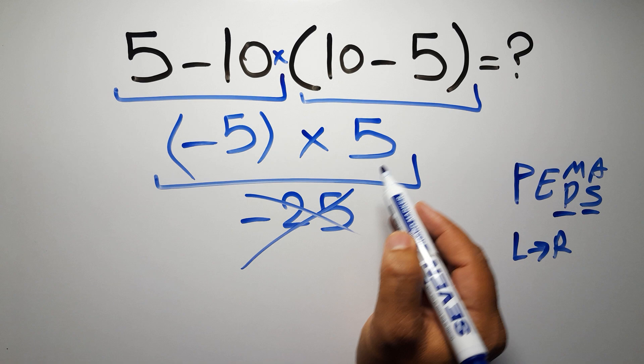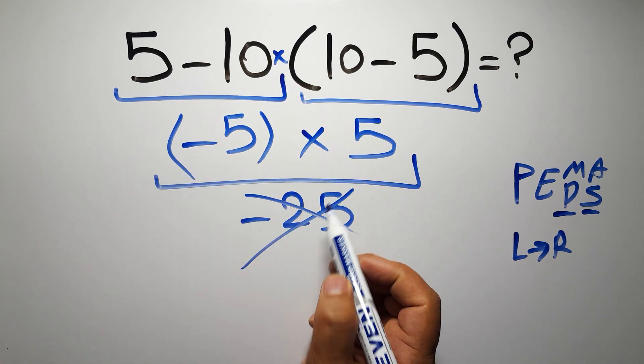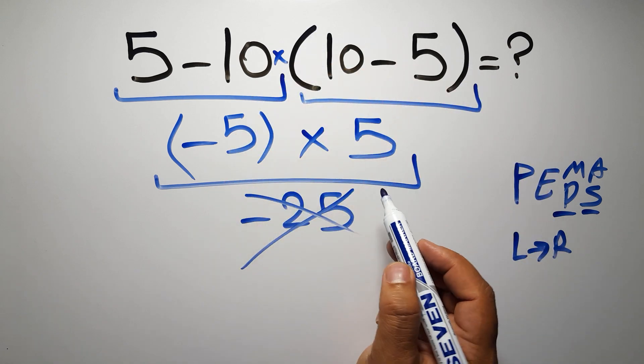According to the PEMDAS, first we have to do this parentheses, then this multiplication, and finally this subtraction. If we do this subtraction before this multiplication or this parentheses, it is wrong.